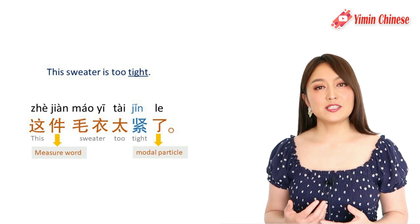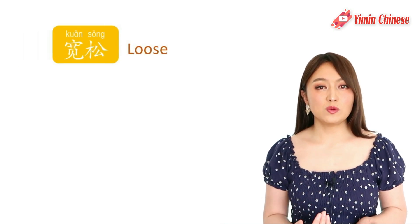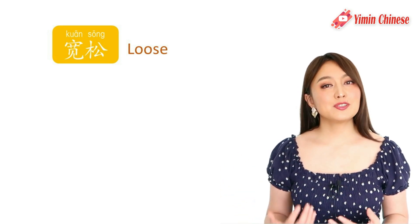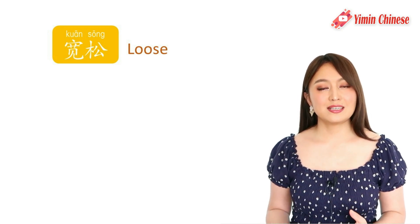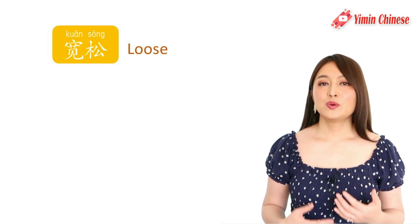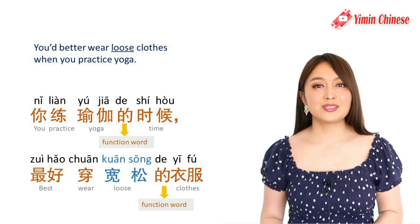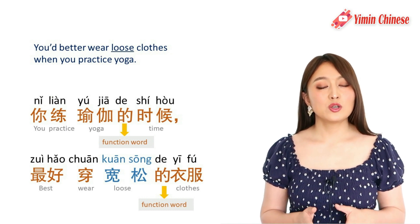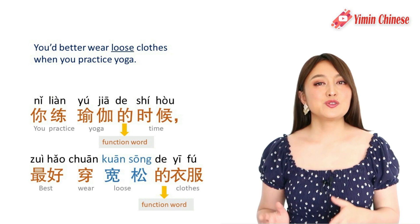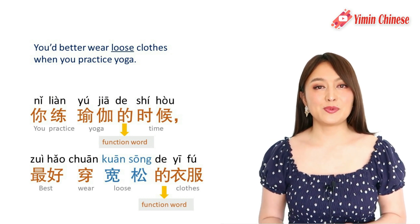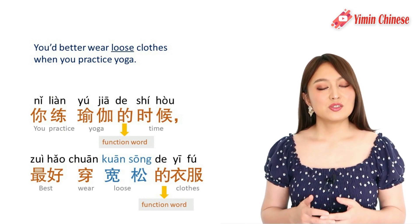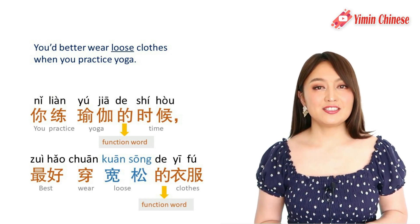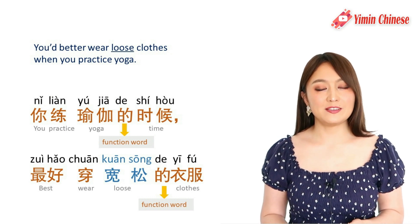And the opposite of tight — loose — is 宽松. 宽 literally means wide, 松 means loose, but most of the time we say both together: 宽松. For example: 你练瑜伽的时候，最好穿宽松的衣服 — When you practice yoga, you'd better wear loose clothes. 最好 plus a verb is a common way to give advice.